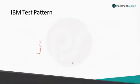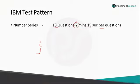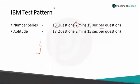The IBM test pattern has four sections. The first section is Number Series — you will get 18 questions with 2 minutes 15 seconds per question; there is no overall time limit, only per-question time. My suggestion is to target completing each question within 2 minutes, since the extra 15 seconds may be lost while clicking or navigating. You must answer within that time or the test moves on automatically.